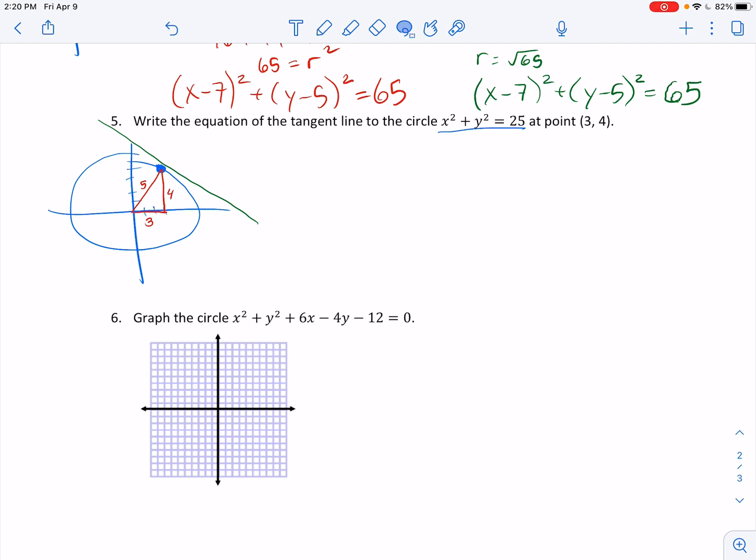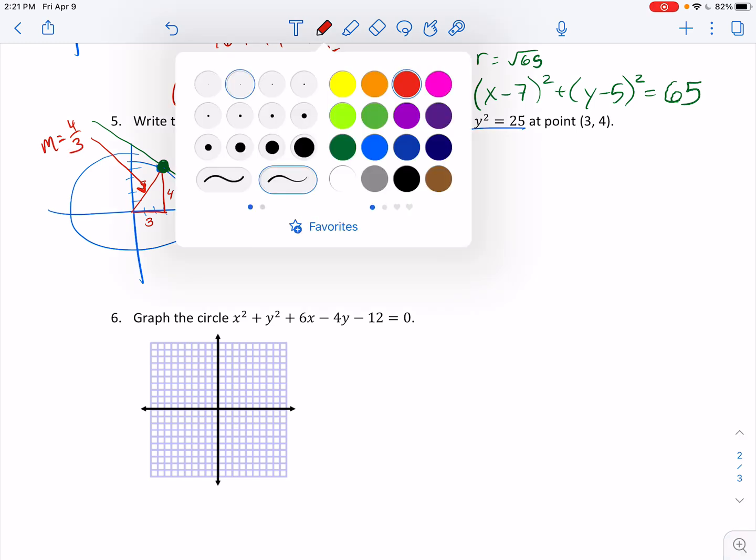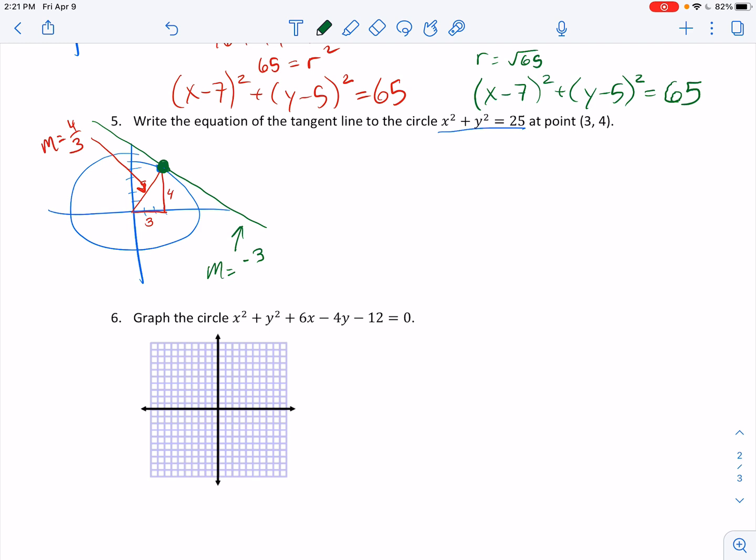So I can find the slope of my radius and then know that the slope of my tangent line is going to be the negative reciprocal. So slope of the radius is rise over run. Notice I'm rising 4 and running 3. That has a slope of rise over run, 4 over 3. And therefore, I know that this guy has a slope of negative 3 fourths.